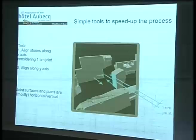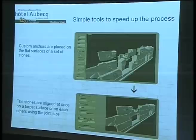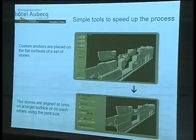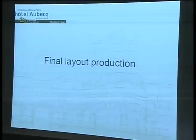A second part of our system was, after having aligned the stones individually, to be able to specify one surface, mark all the stones with small anchors, and in one click bring all the stones into the same plane with a constant joint distance. This worked very well for the first part of the facade that was flat, but when we had to deal with curves and round corners, we had to do it ourselves. The main reconstruction took one year in total.